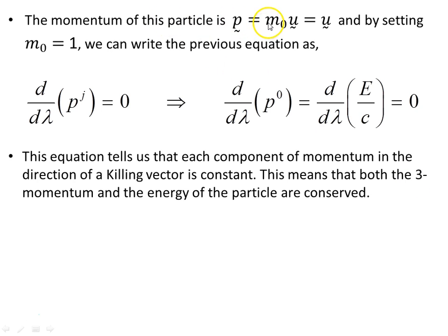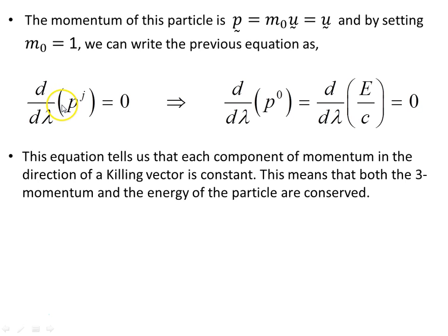Setting the momentum p equals M_0 u and taking unit mass M_0 equals 1, we can rewrite the previous equation as d/d_lambda of p_j equals 0 for each component j from 0 to 3. The 0 component of momentum is the energy component E/c, and its derivative being zero means energy is conserved. Each of the spatial three-momentum components p1, p2, p3 also has zero derivative, meaning they are constant. So this equation tells us that each component of momentum in the direction of the killing vector is constant, meaning both the three-momentum and the energy of the particle are conserved.